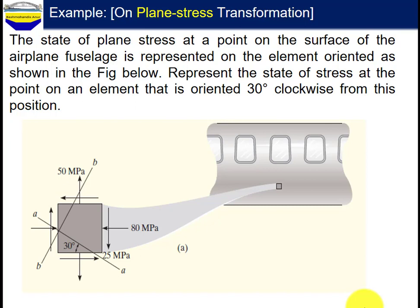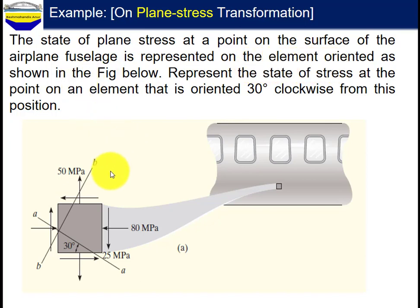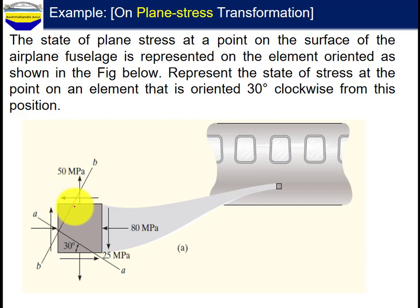Hello everyone, today I'm going to show you an example on plane stress transformation. Let me read the question first. The state of plane stress at a point on the surface of the airplane's first leg is represented on the element oriented as shown in the figure below. The state of stress represents the state of stress at a point on an element that is oriented 30 degrees clockwise from the position.